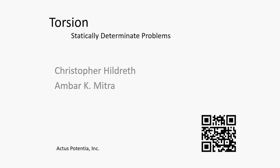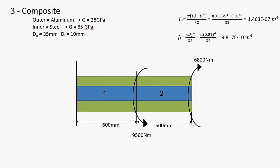In this video I'm going to go over solving a statically determinate torsion problem — specifically approaching a composite problem. This is a fairly simple composite shaft with one uniform geometry, but it has a composite material.